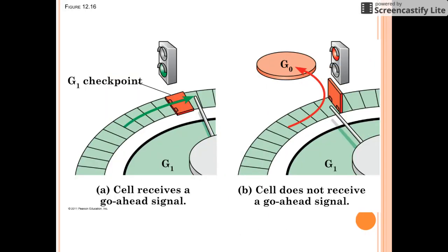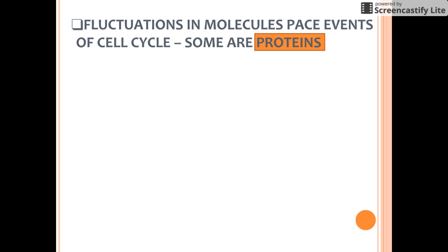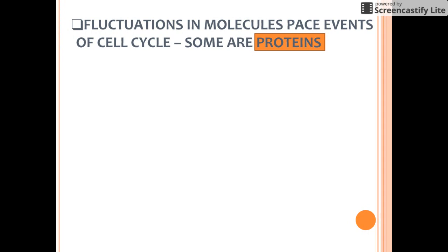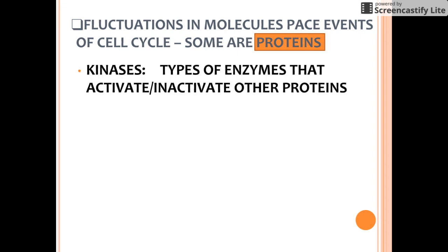Here's just a little graphic. If the cell gets the green signal, it goes ahead and proceeds to the next step; if it doesn't, it goes into G0. Fluctuations in molecules pace the events of the cell cycle, and many of these are proteins. Rhythmic fluctuations in the abundance and activity of cell cycle control molecules pace the sequential events of the cell cycle.